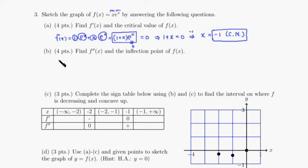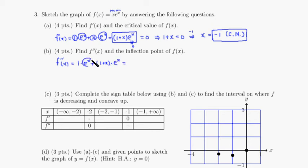Now let's do part b — we have to take another derivative. f double prime of x: derivative of the first factor is 1, times the second e to the x, plus the first (1 plus x) times the derivative of e to the x which is e to the x again. Factoring out e to the x, what's left is 1 plus 1 plus x, giving us e to the x times (2 plus x). That's the second derivative.